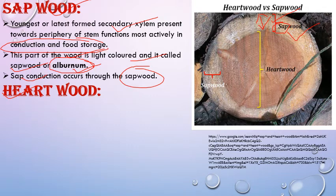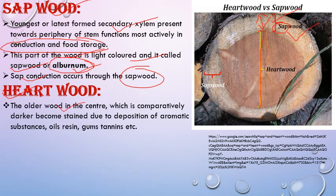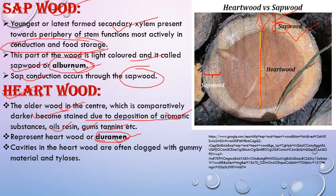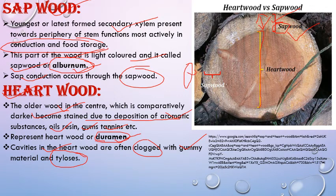Heartwood is the inner central portion — dark in color, filled with tannins, resins, and other chemical compounds. It is made up of dead cells with thick suberized cell walls. This older wood at the center is comparatively darker, stained due to deposition of aromatic substances like oils, resins, gums, or tannins. Heartwood is also known as duramen. The cavities are clogged by gummy substances or special structures known as tyloses. Tyloses are pouch-like structures formed by parenchyma cells surrounding xylem tracheids, filled with tannin, and they act as plugs.